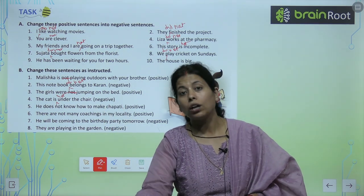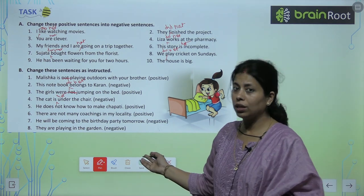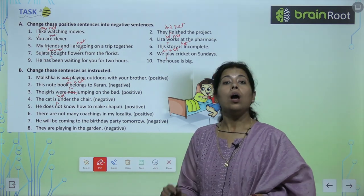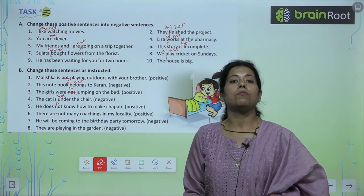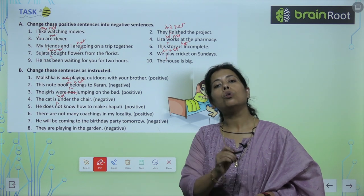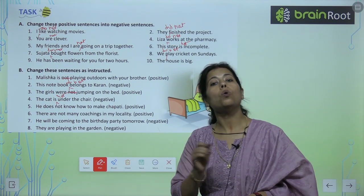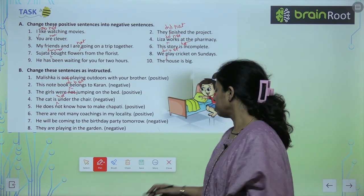तो ऐसे ही आपको positive को negative में convert करना है — 'not' लगा दीजिए, 'do not' या 'did not', जो भी आएगा according to the tense। और अगर आपको negative से positive में लाना है, तो 'not' को, या फिर 'do not', 'did not' को हटा दीजिए। Simple है।